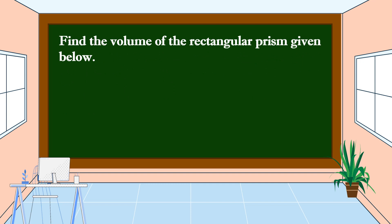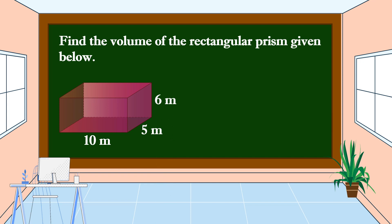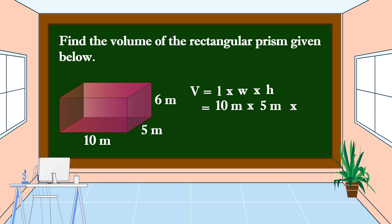Find the volume of the rectangular prism given below, with a length of 10 meters, a width of 5 meters, and a height of 6 meters. We're going to use this formula: volume is equal to length times width times height. The length is 10 meters, the width is 5 meters, and the height is 6 meters.